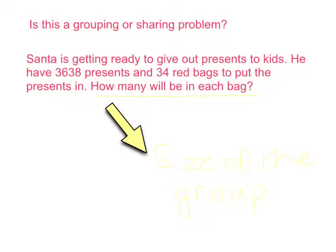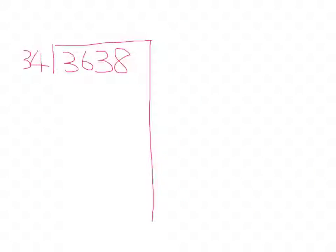So this problem is definitely a sharing example. Now I'm going to solve this problem using partial quotients. First, I'm going to put 100 times 34 first, because I know that 100 times 34 is 3400.